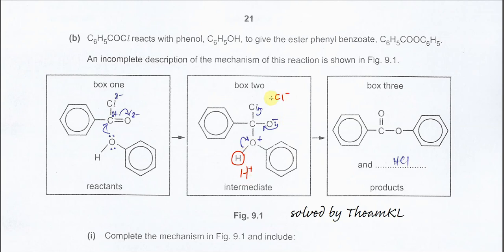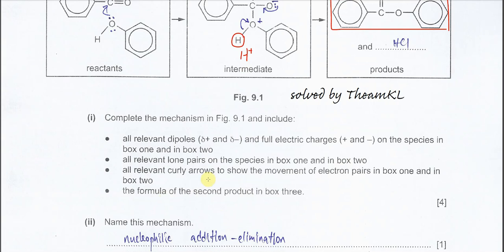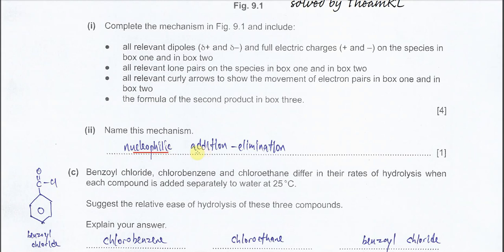The chloride and H+ combine to form HCl. After the pi bond reforms, the C-Cl bond breaks, and the lone pair is restored on oxygen, forming the product — phenyl benzoate. This is the phenyl group attached to the benzoate. The mechanism is called nucleophilic addition-elimination.